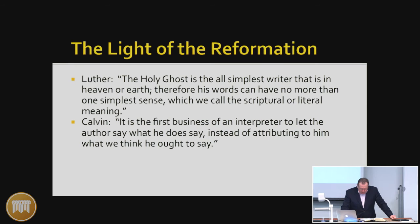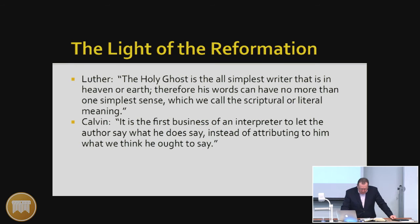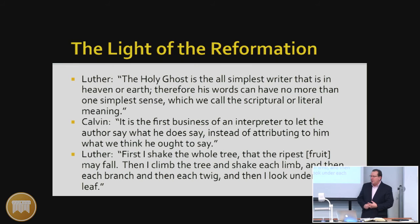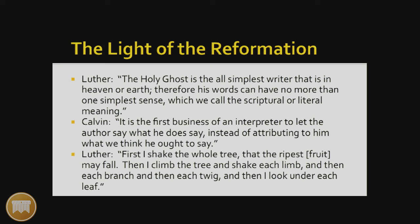So how do we approach this process of observation? The key word is we do it systematically. Luther put it this way: 'First I shake the whole tree that the ripest fruit may fall. Then I climb the tree and shake each limb, then each branch, then each twig, and then I look under each leaf.' He starts with the large and comes down to an understanding of the specifics.